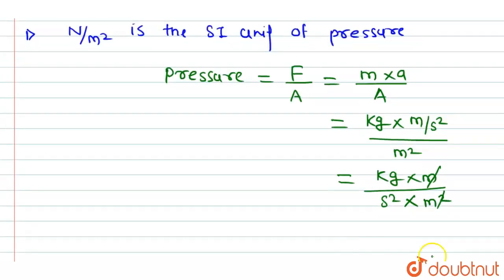This meter will get cancelled. So it will be equal to kg divided by meter into second square.